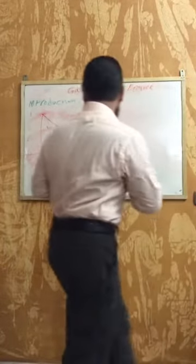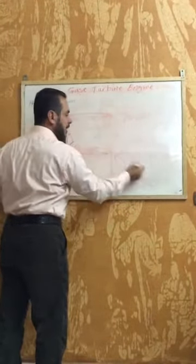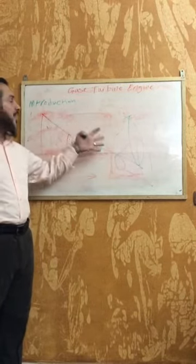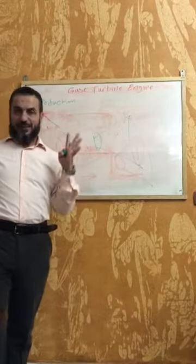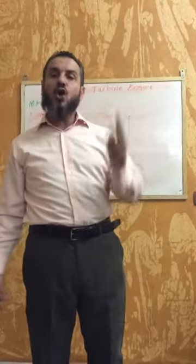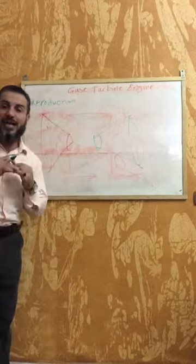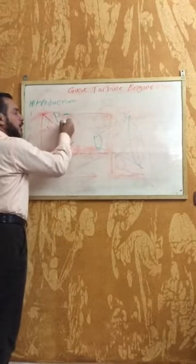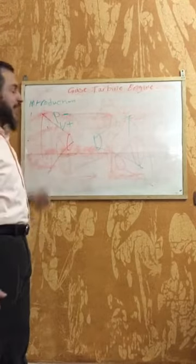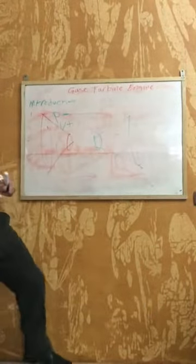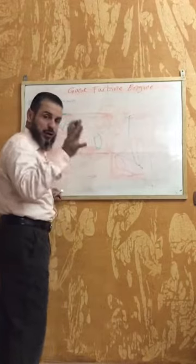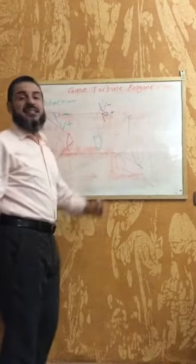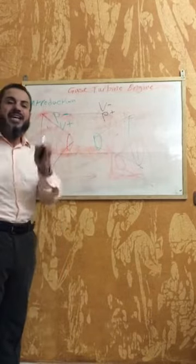A divergent duct is a fixed geometry duct whose diameter progressively increases from front to back. Any fluid — liquid or gas — flowing through a convergent duct will see its velocity increase, while any fluid flowing through a divergent duct will see its velocity decrease and its pressure increase. This is true when airflow is at subsonic speed and below.